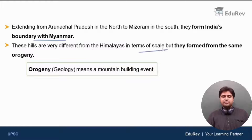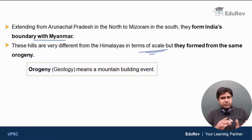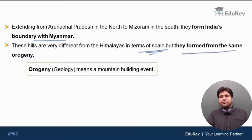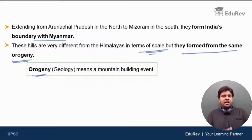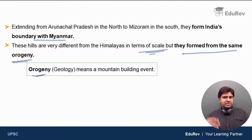These hills are very different from the Himalayas in terms of scale — they are a chain of low hills and don't resemble the Himalayas in any way. But this point is very important: they are formed from the same orogeny. In geology, orogeny means a mountain-building event. The collision between the Indian Plate and the Eurasian Plate is the orogeny that led to the formation of the Himalayas, and the Eastern Hills are the result of that same event. That is why we include the Eastern Hills as part of the Himalayan range.